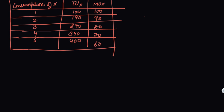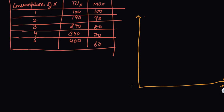This was the table. Now let's see the graphical representation of these utilities. On the X-axis, you take the units consumed — units of commodity X. On the Y-axis, you take your total utility or marginal utility, or both.